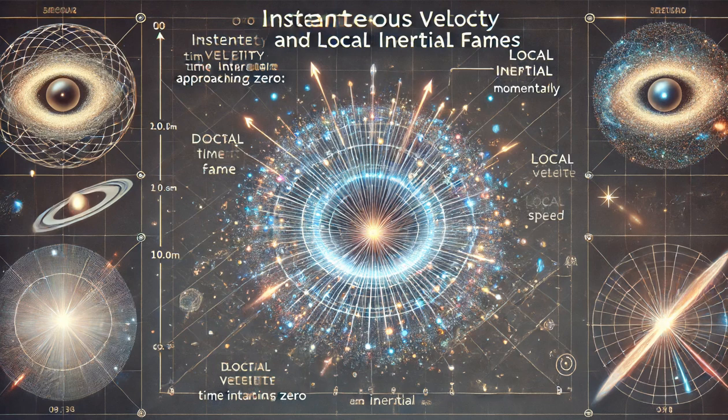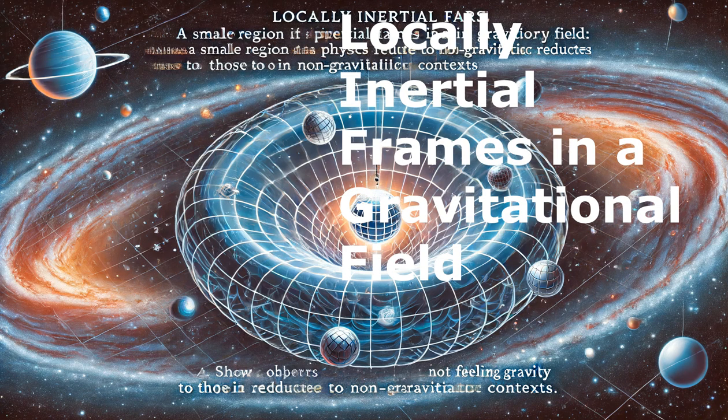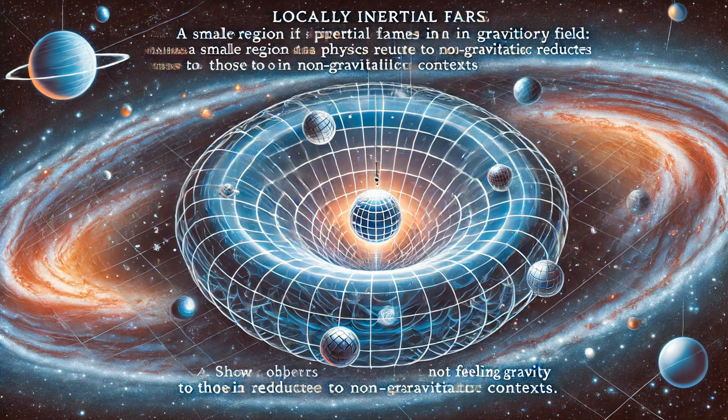Locally Inertial Frames in a Gravitational Field. In general relativity, it is assumed that at any point in spacetime subject to a gravitational field, it is possible to choose a locally inertial coordinate system. In an infinitesimally small region around any point, the laws of physics take the same form as they do in an inertial Cartesian coordinate system.